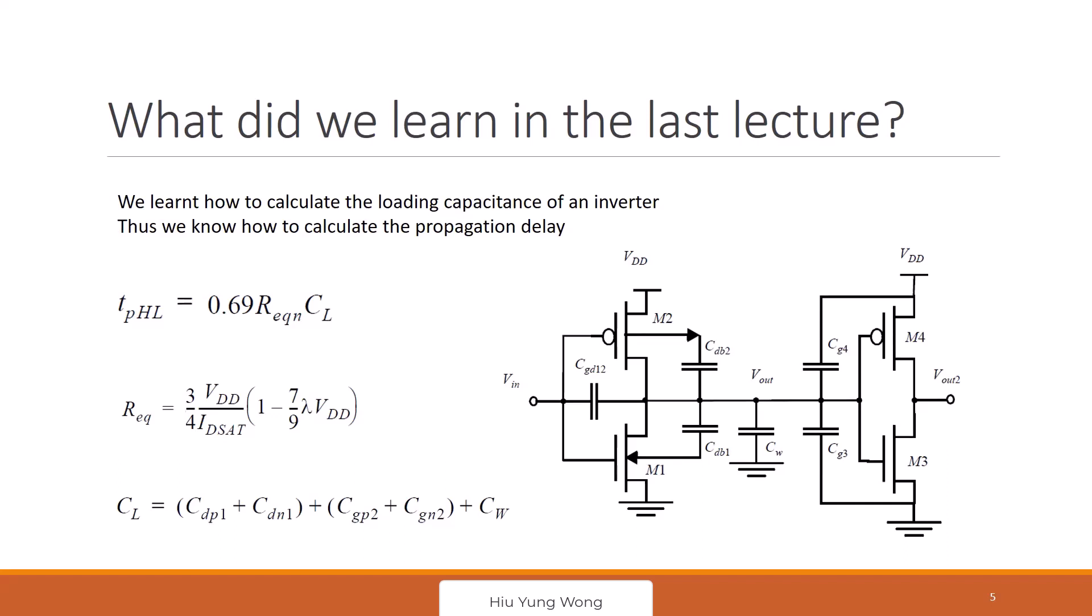So last time we talked about the inverter. We said that in order to know the delay of the inverter, we use 0.69 RC. This is an approximation, but it's complicated enough for us in the circuit.